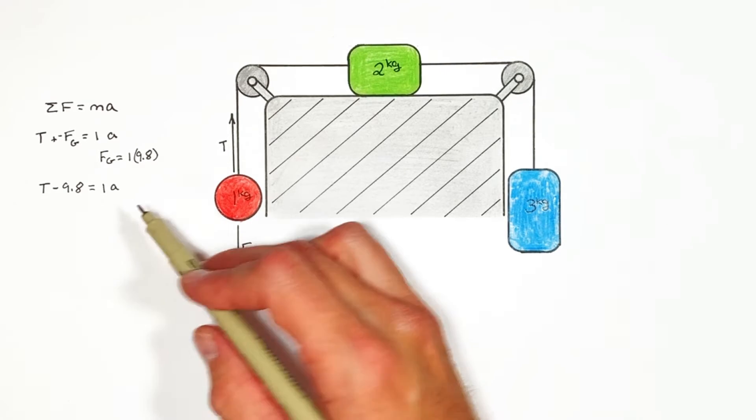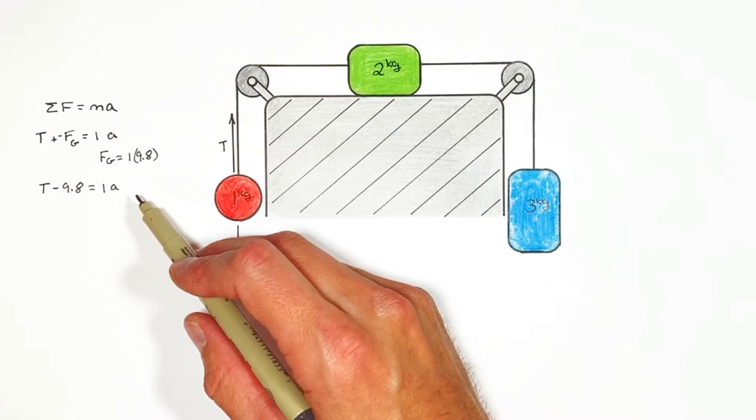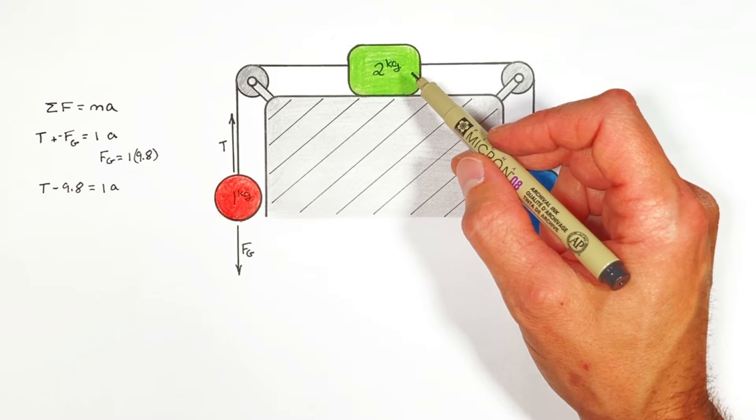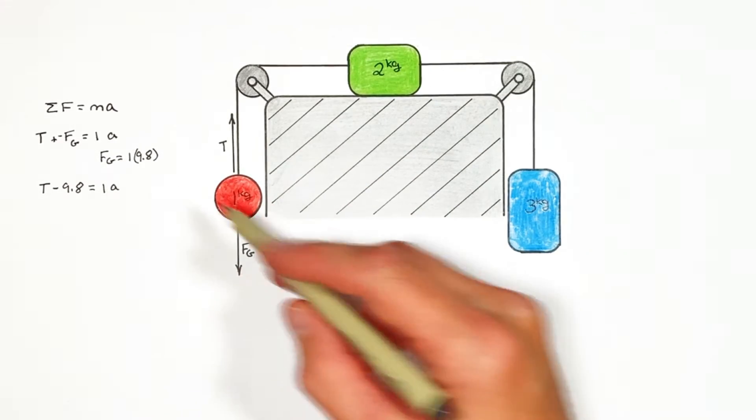Now just like in math class if you have two unknowns you better have two equations. So all we're going to do now is look at another block in order to set up another equation in order to solve for our unknown acceleration.